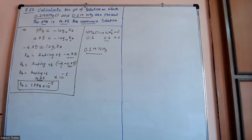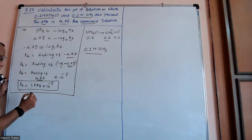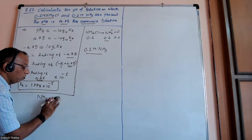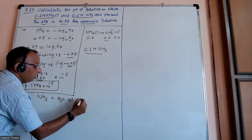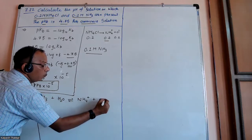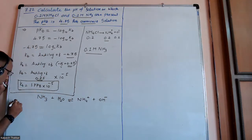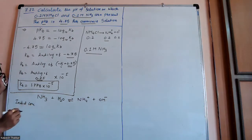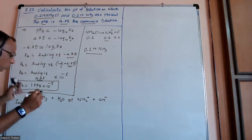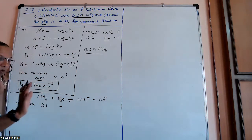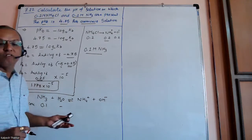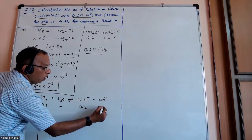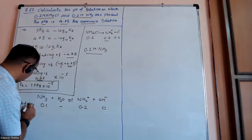Now we consider the reaction: NH3 reacts with water H2O to give NH4⁺ and OH⁻. Writing the initial concentrations: ammonia is 0.1 molar. Water's concentration is not calculated because in the value of Kb, the concentration of water is already included. The initial concentration of NH4⁺ is 0.2 and OH⁻ is zero.